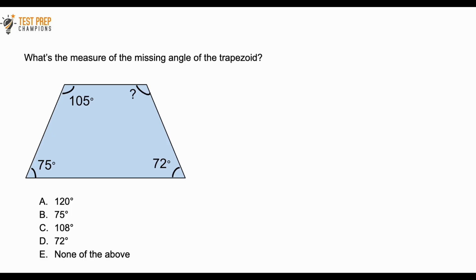What's the measure of the missing angle of the trapezoid? Is it A, B, C, D, or E? Now's your chance if you'd like to pause the video, try to figure this out, and whenever you're ready, just unpause the video and we'll talk about it. A trapezoid is a four-sided plane figure. For any four-sided plane figure, the internal angles are always going to add up to 360 degrees.